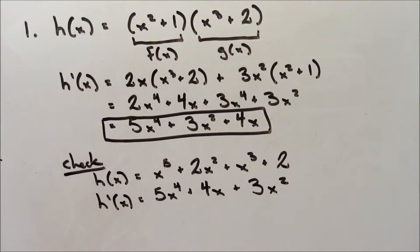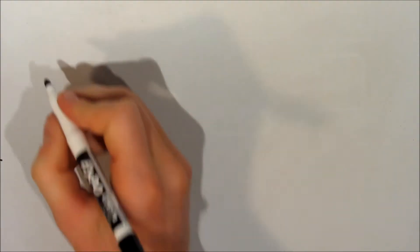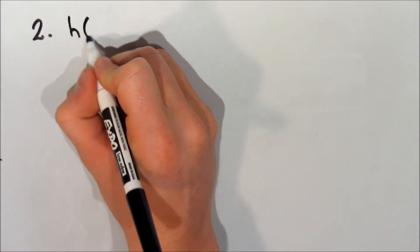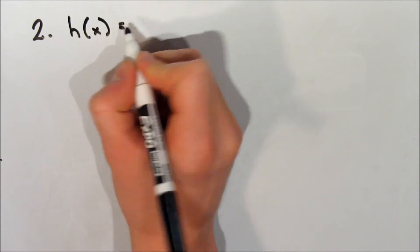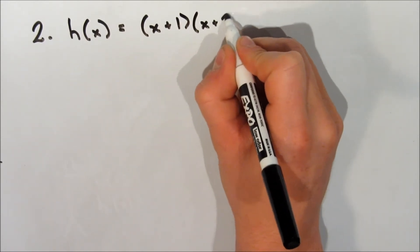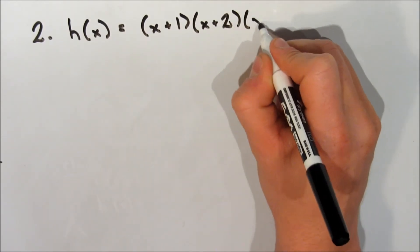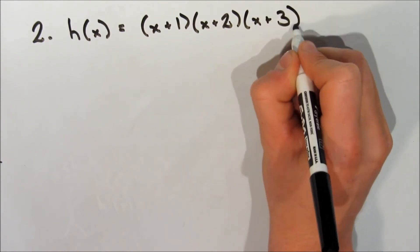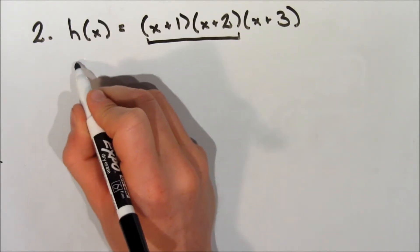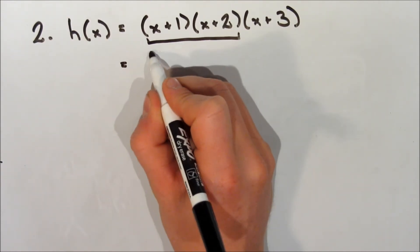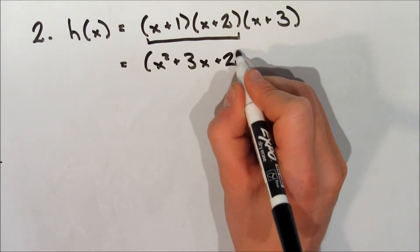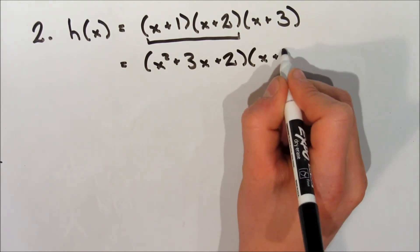We can see that the terms are just in different spots, but we get the same answer — so we know that this technique works. For our next example, h of x is equal to x plus 1, multiplied by x plus 2, multiplied by x plus 3. You may be thinking: there are three terms here, how do we do this? We're actually going to group the first two terms together, expand them to get x squared plus 3x plus 2, and that becomes our f of x.